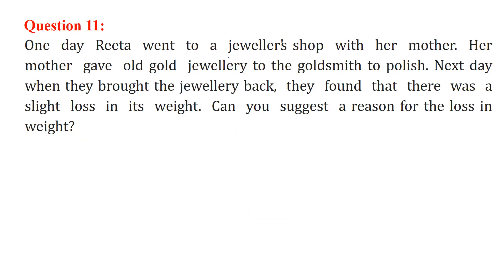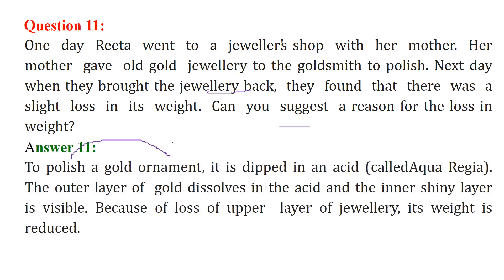One day, Rita went to a jeweler shop with her mother. Her mother gave old gold jewelry to the goldsmith to polish. Next day, when they brought the jewelry back, they found that there was a slight loss in its weight. What was the reason? In order to polish a gold ornament, it is dipped in an acid called aqua regia. The outer layer of gold dissolves in the acid and the inner shiny layer comes up which is visible and it shows that it has been polished. Because of the loss of upper layer of jewelry, the weight is reduced.